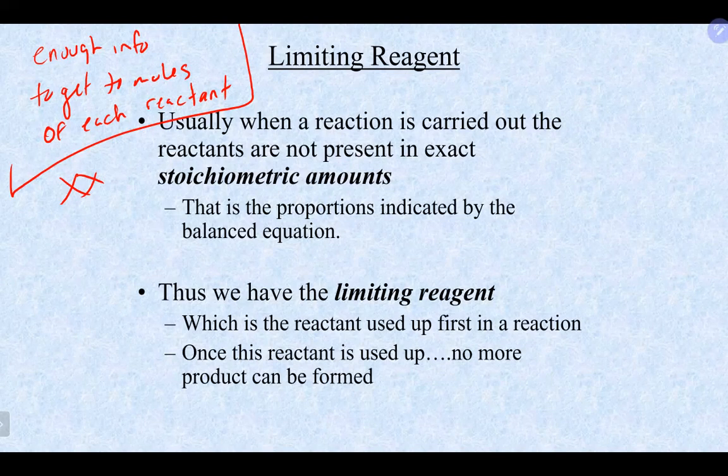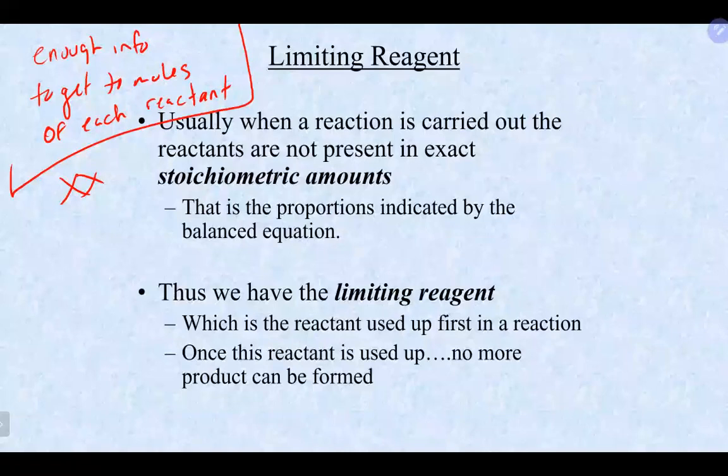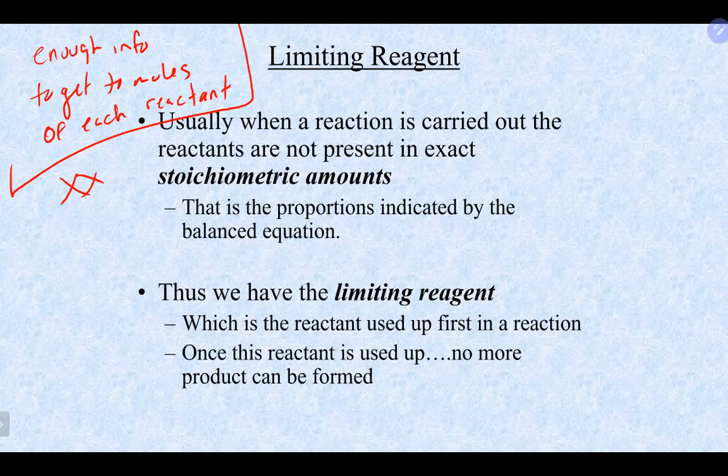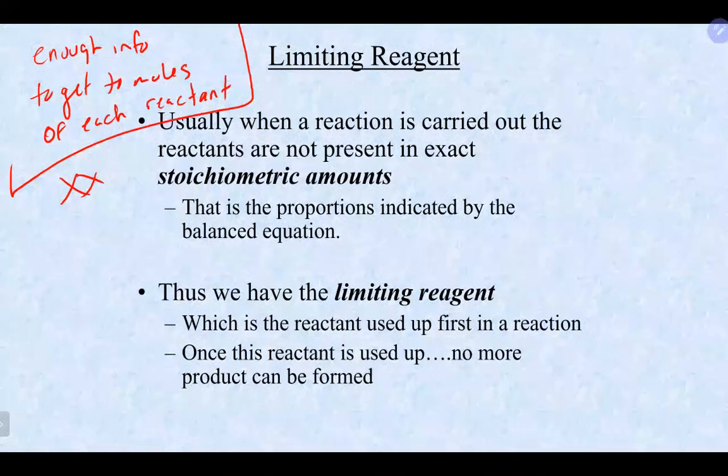If you have a basic stoichiometry problem where you're only given one piece of information about a reactant, it's assumed that reactant is the limiting reagent and you don't need this extra step. But if you have units to get through conversions to moles for each reactant, it definitely is a limiting reagent problem. The good news is you do the same steps as before, just with one additional calculation to find the limiting reagent.